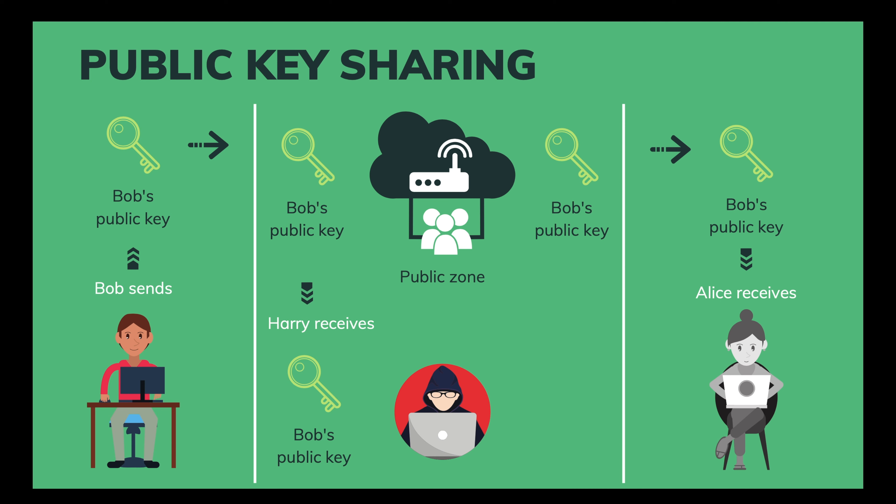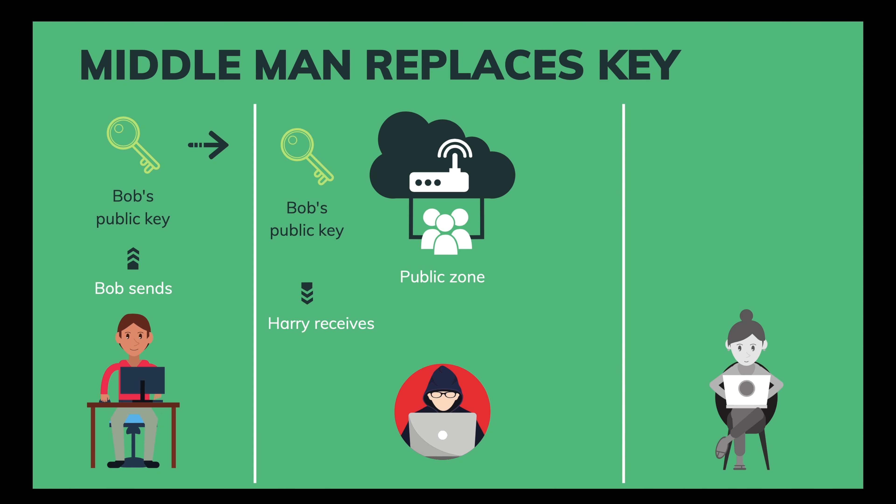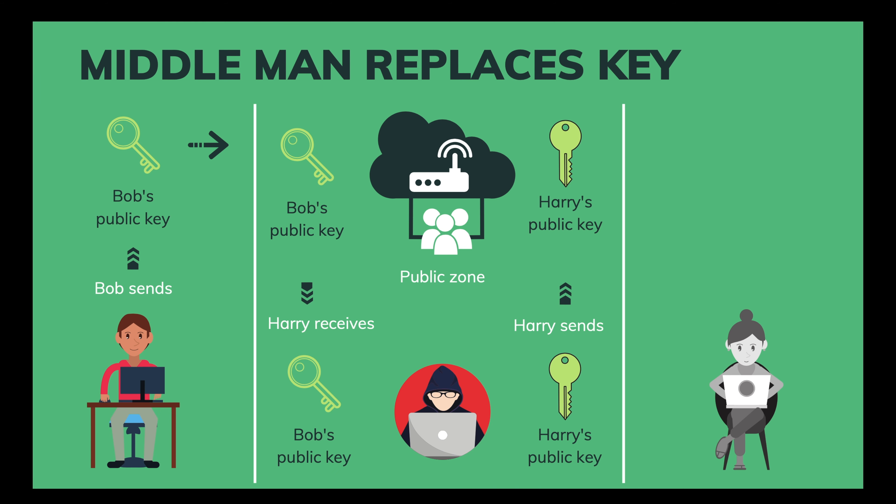However, life is not so easy. Although Harry cannot decrypt the message with Bob's public key, he can still interfere with the public key sharing and replace Bob's public key with his own. Now when Alice receives the key, she thinks it's Bob's but it's actually Harry's. So if Alice encrypts her message with this key, Harry can decrypt it with his private key. The reason this can happen is that a key is simply just a number — there's no identity information to tell us who its owner is. So we should put the key together with some identity information.